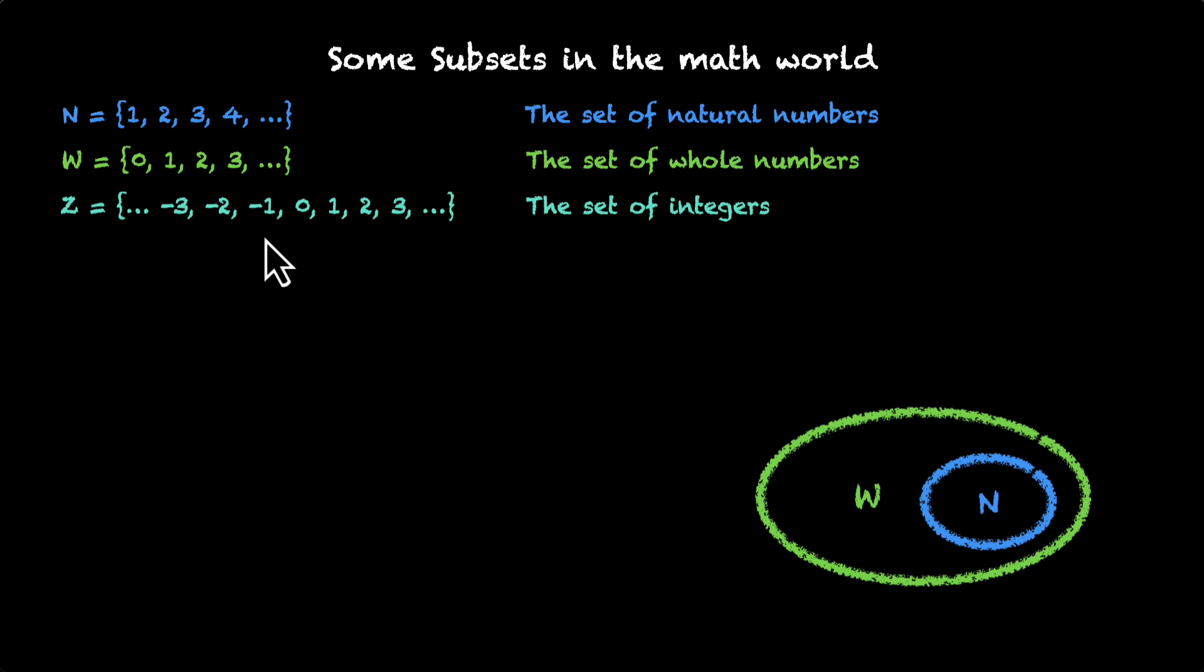So if we visualize this on the map, this is what we'll get. Z has w which has n.